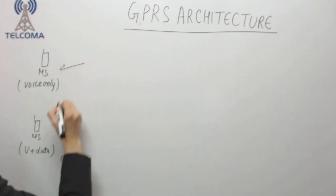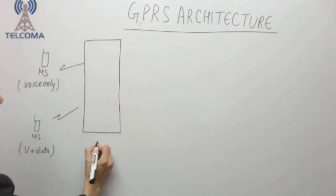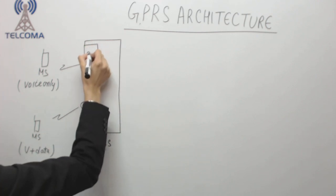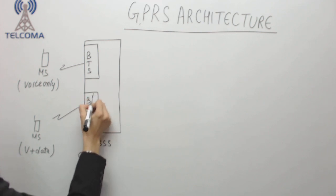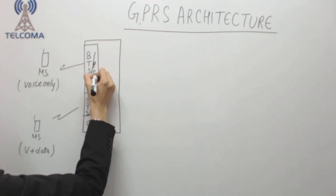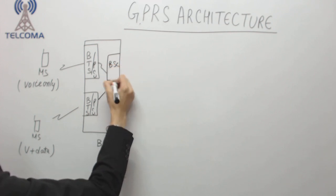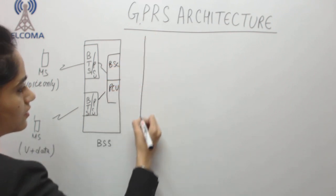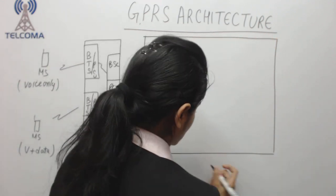With the help of the radio interface, both mobile stations are attached to the BSS part. In this part we have BTS, and both have a packet control unit. The BTS is attached to the BSC, and the BSC also has a packet control unit.